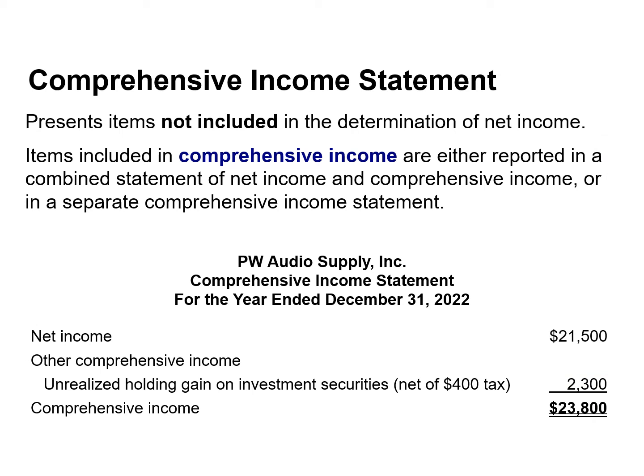The Comprehensive Income Statement presents items not included in the determination of net income. Examples include certain adjustments to pension plan assets, gains and losses on foreign currency translation, and unrealized gains and losses on certain types of investments. Items excluded from net income but included in comprehensive income are either reported in a combined statement of net income and comprehensive income, or in a separate statement.